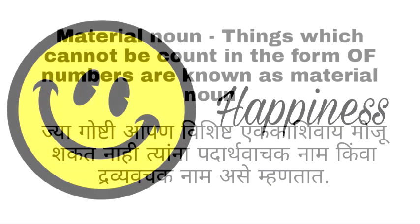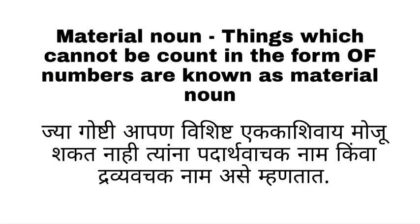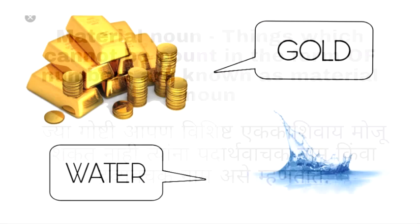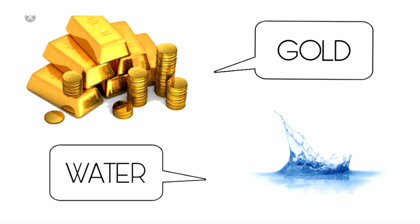Next is material noun. Material noun is defined as: the name of things which cannot be counted in the form of numbers are known as material nouns. For example — gold, oil, water. You cannot count them as 1, 2, 3, 4 without a measurement. So, things we cannot count are material nouns. So, this was about noun.